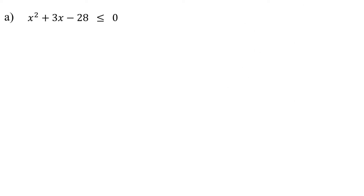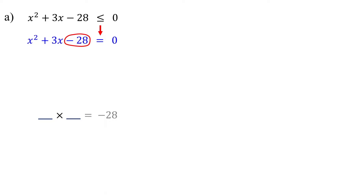The first step in solving a quadratic inequality is to change the inequality to an equation. Then, find the solutions to the quadratic equation. Let's use the factoring method. To factorize, we need to find two numbers that multiply to give negative 28, and at the same time, add up to 3.